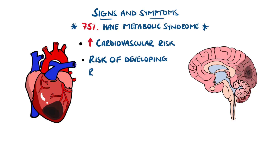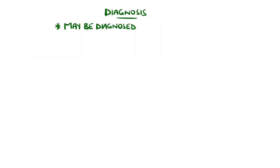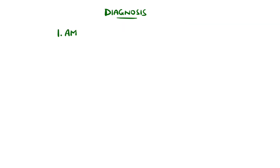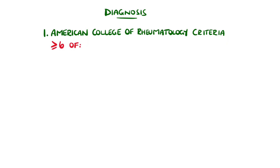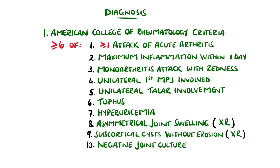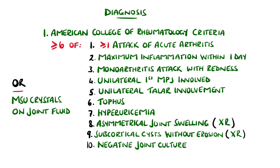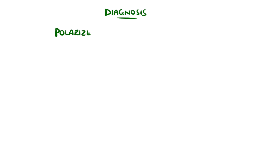There is also an increased risk of developing renal stones due to the hyperuricemia. A diagnosis can be made clinically, particularly if the patient is known to have hyperuricemia, meaning no specific tests or imaging are needed. But according to the American College of Rheumatologists, six or more of these features indicate gout. The gold standard for diagnosis is analysis of synovial fluid or the tophi themselves, demonstrating monosodium urate crystals using polarized light microscopy.